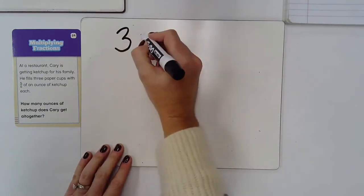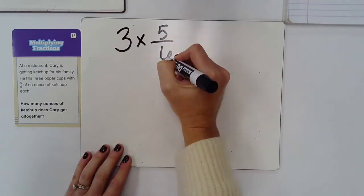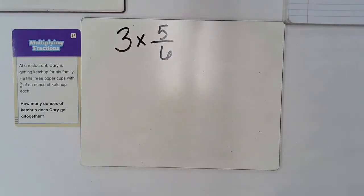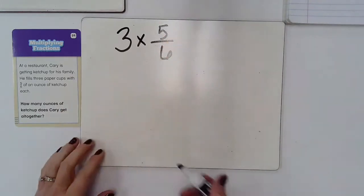I can think about this as three times five-sixths. And one way I can solve it is I can use repeated addition. I can think of three groups of five-sixths.